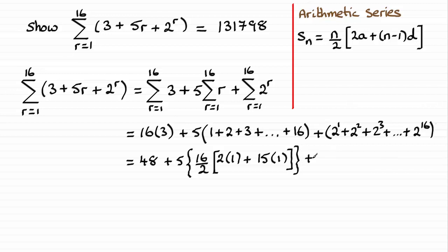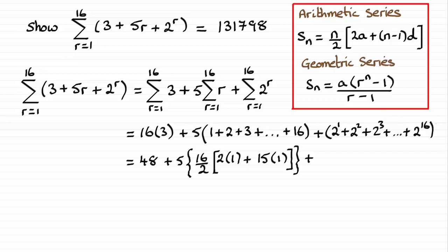Now when it comes to this next bracket, you should recognise this as a geometric progression. We're continually multiplying by the same value, 2. And the sum of a geometric series, you should also be familiar with this. Sn is equal to the first term, a, times the common ratio r to the power n minus 1, all divided by r minus 1.